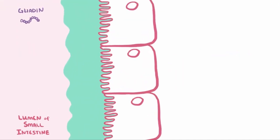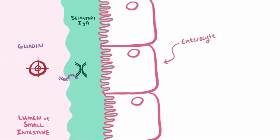When gliadin gets to the small intestine, it's bound to secretory IgA in the mucosal membrane, which is an antibody that helps protect gut epithelial cells called enterocytes from toxins and pathogens. Usually things bound to secretory IgA are marked for immune cell destruction, but in celiac disease,